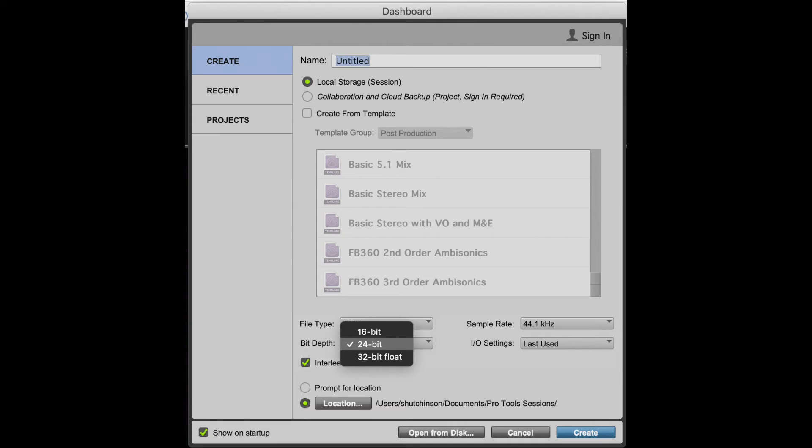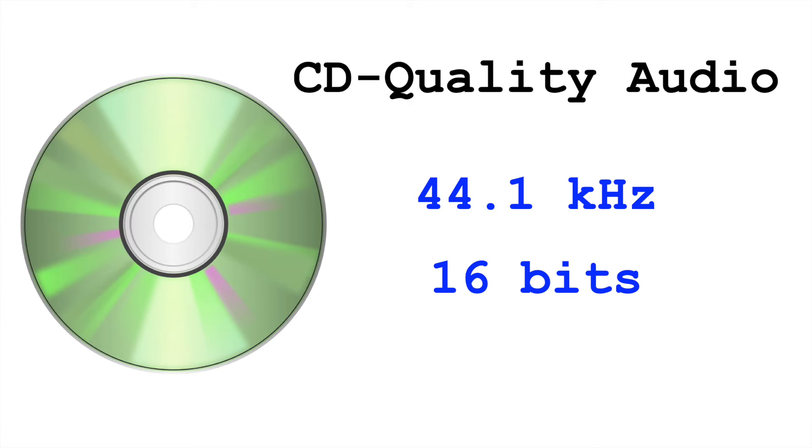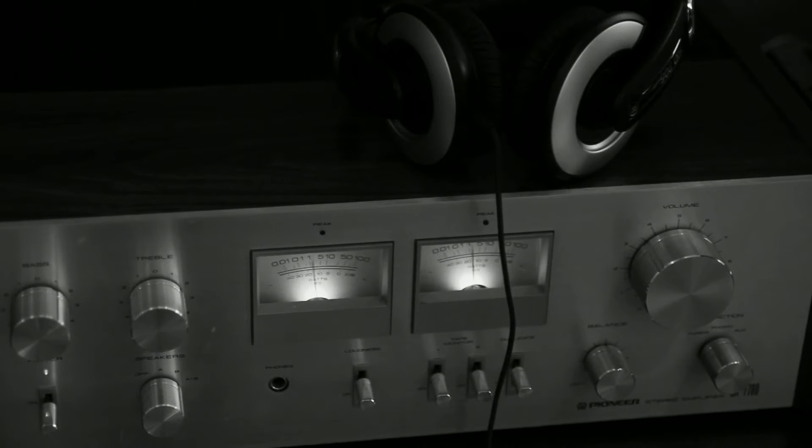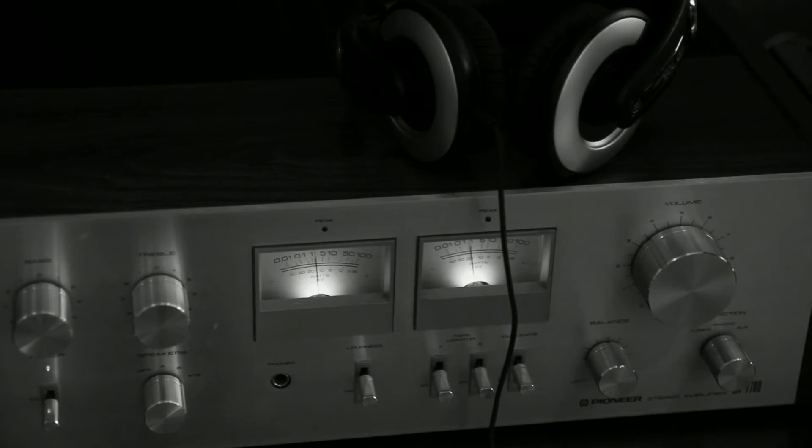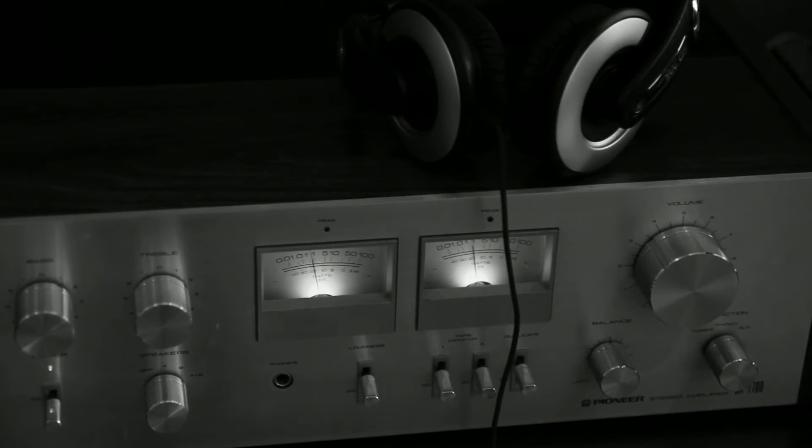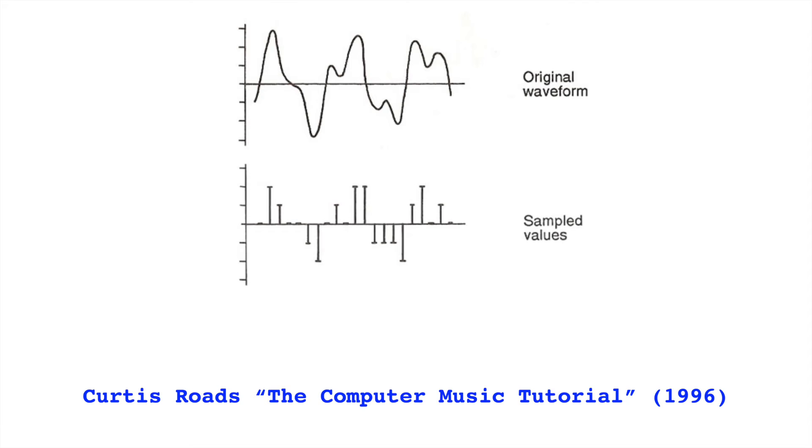Many times, we'll record at a higher bit depth, 24 for example, with the knowledge that we're going to reduce that bit depth to 16 bits in the final product. Again, the number of analog amplitudes is infinite, so when we digitize the waveform, we can't use that exact amplitude. We use the closest possible amplitude to the original analog waveform.